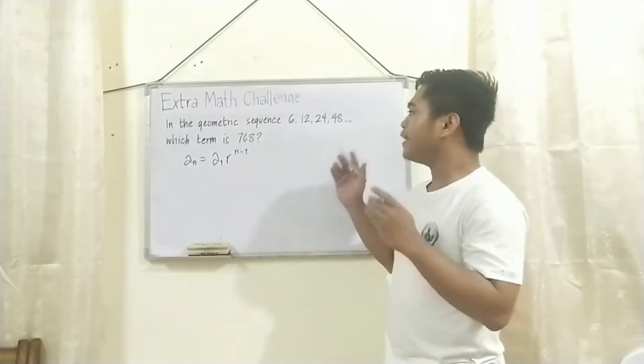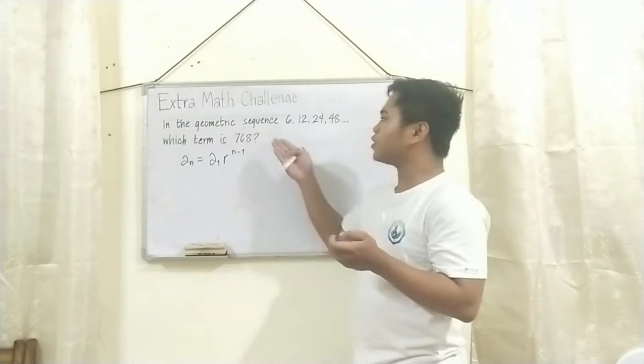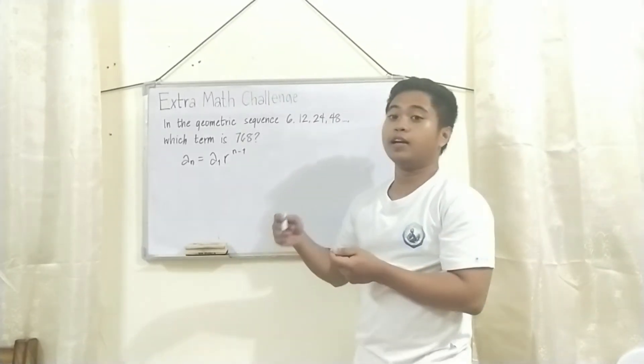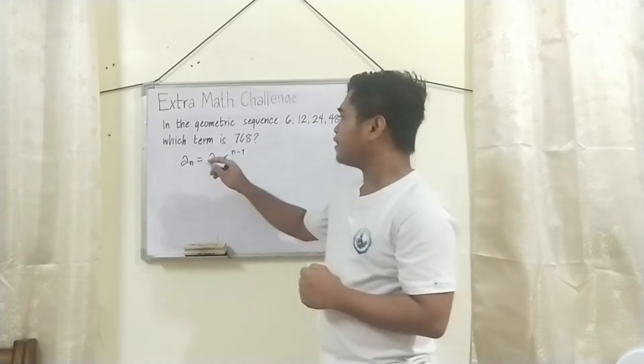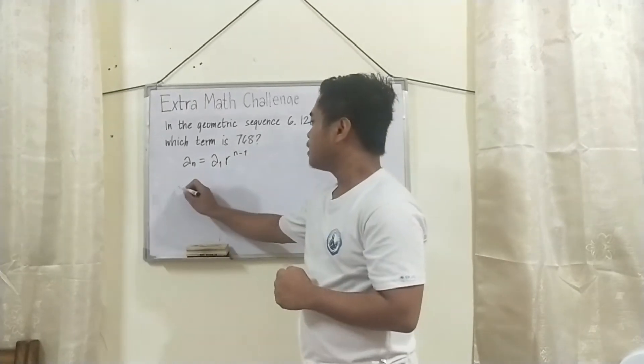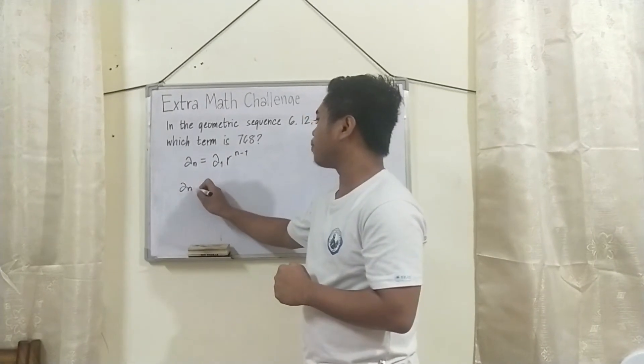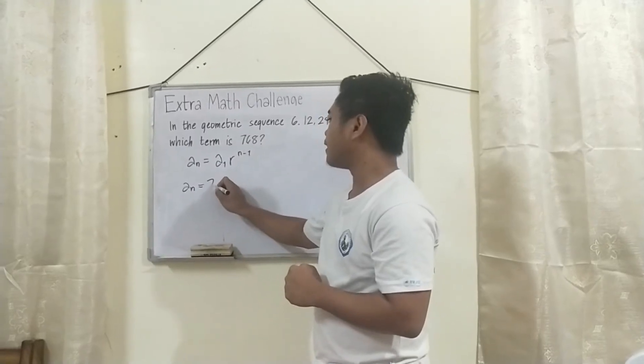Now, i-identify muna natin kung dito sa problem natin, sino si A sub n, si A sub 1, si R, at si n. So, yung hanapin pala natin is si n. Identify natin, sino ba si A sub n? Si A sub n, sa dine-deal natin na problem, is yung 768.